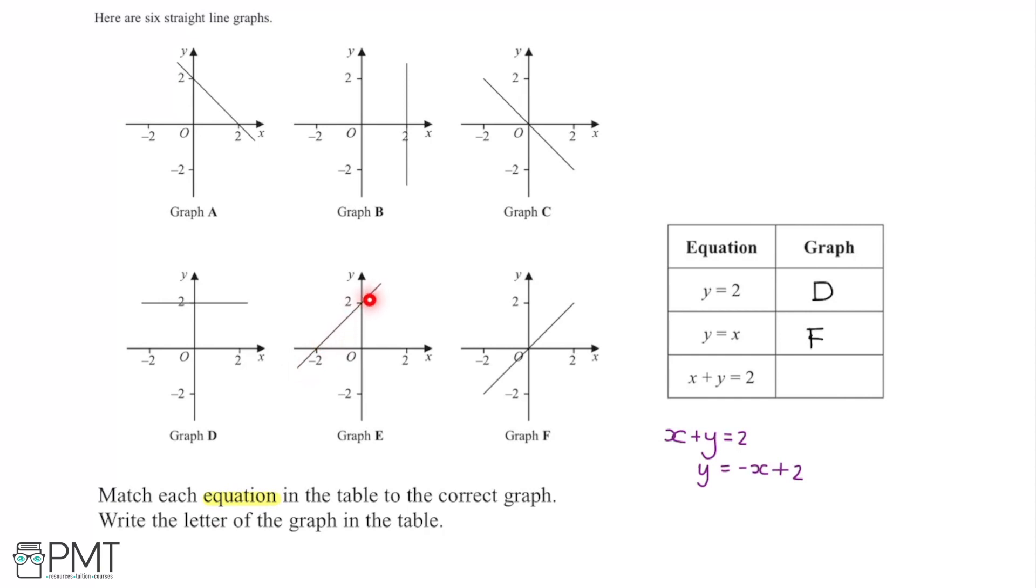This graph has a y-intercept of 2, however its gradient is positive 1—it's increasing. This graph here has a y-intercept of 2 and is decreasing, so it has a gradient of -1. This is the correct answer. Graph A is the correct graph.